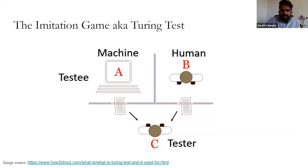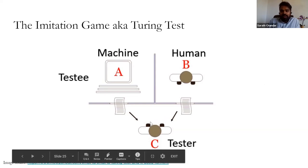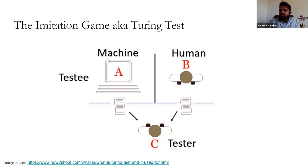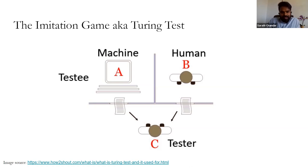Alan Turing asked 'Can machines think?' and then: how do we know that machines are thinking and behaving like humans? He designed a test: there is a human interrogator who asks questions. In one closed room is a machine, and in another is a human being. The interrogator can ask questions to either room and receives a reply. Based on the reply, they must decide whether it is a machine or a human. If the machine can convince the interrogator that it is human, it has passed the imitation game, or Turing test.